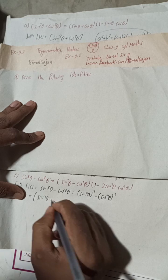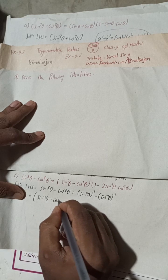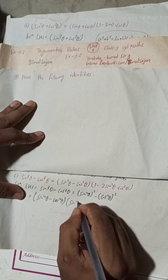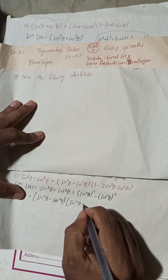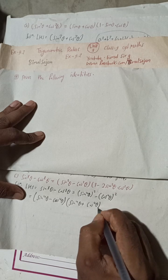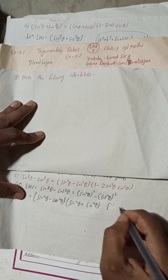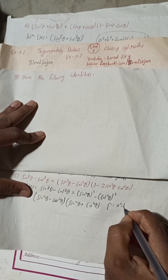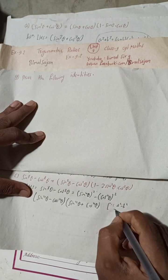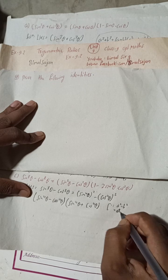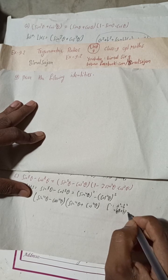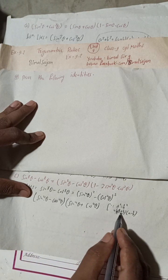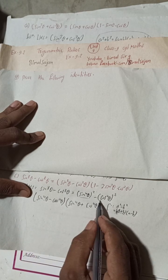We have (sin⁴θ - cos⁴θ)(sin⁴θ + cos⁴θ), because the formula a² - b² equals (a + b)(a - b) or (a - b)(a + b). Here, sin⁴θ is 'a' and cos⁴θ is 'b'.